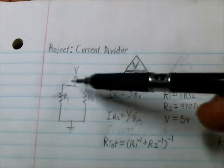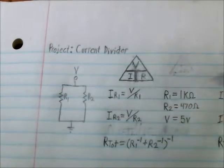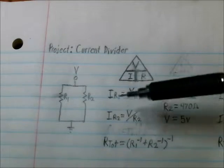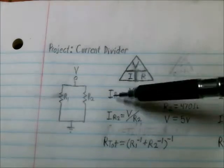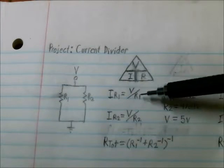This is a current divider which is comprised of two resistors in parallel. And the way to calculate the current through each resistor is by using Ohm's law. So to find the current, you divide the voltage by the resistance.